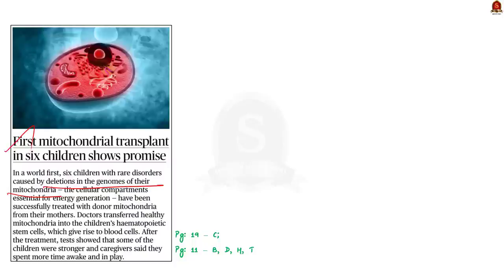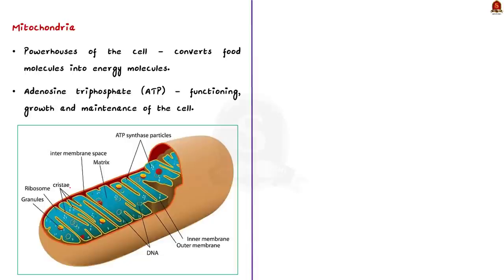In this context let us learn about mitochondrial replacement therapy. Mitochondria are special compartments or organelles present in our cells. They are known as the powerhouses of the cell because mitochondria break down food molecules and convert them into energy molecules called adenosine triphosphate or ATP. ATP is utilized by the cell for functioning, growth, and maintenance. If mitochondria do not work properly, only a meager amount of energy is generated, cells get damaged and ultimately die, leading to organ and system failure.